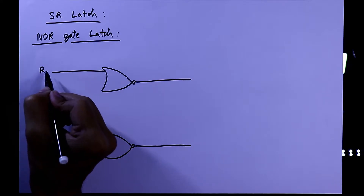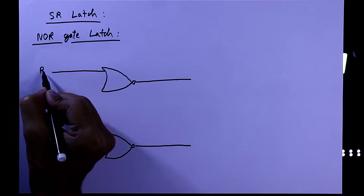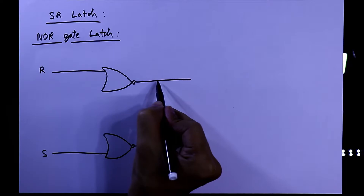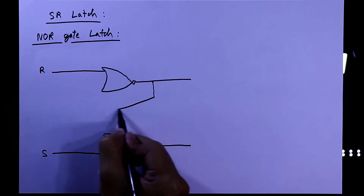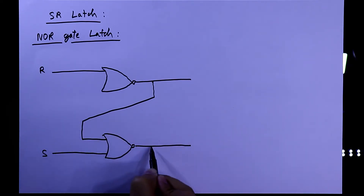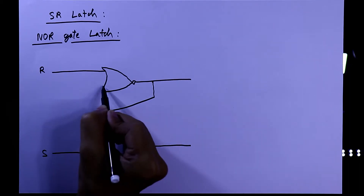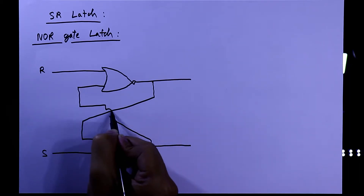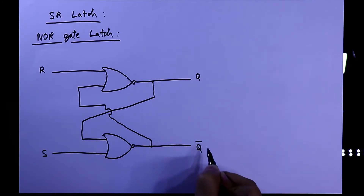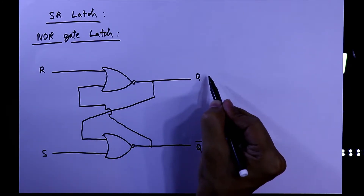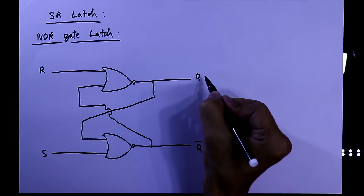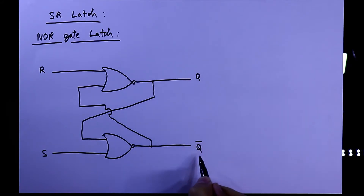The inputs are R (reset) and S (set). The output of the first NOR gate is connected to the input of the second NOR gate, and the output of the second is connected back to the first. The outputs are Q and Q-bar — if Q is 0 then Q-bar should be 1, and if Q is 1 then Q-bar should be 0.